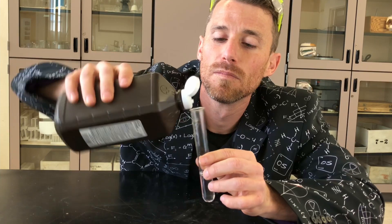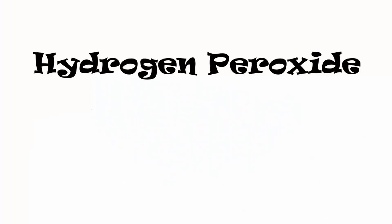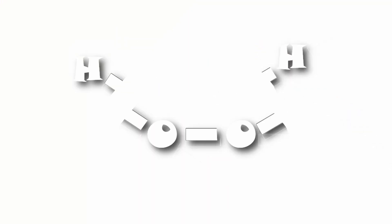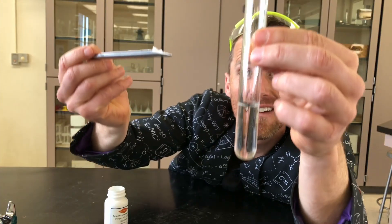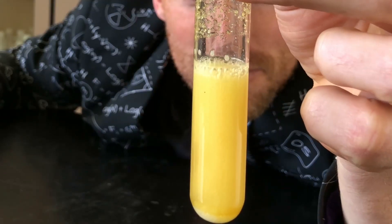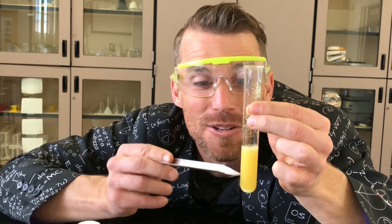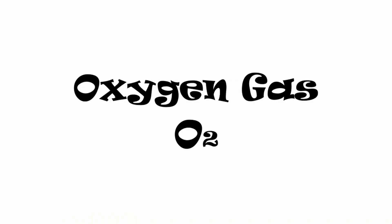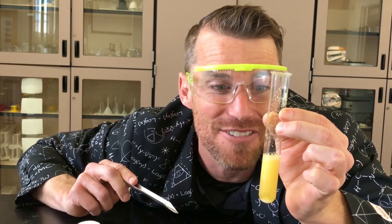Second type of reaction: decomposition. Hydrogen peroxide is H2O2. What we're going to do is split that apart into hydrogen gas and oxygen gas. We won't collect this one, but see if you notice the evidence of reaction. I'm going to use potassium iodide as a catalyst — it's going to help my hydrogen peroxide split, but it won't be involved in the reaction. Bubbles are evidence of a reaction.